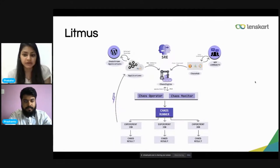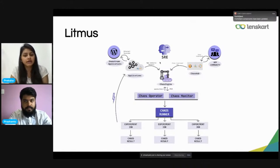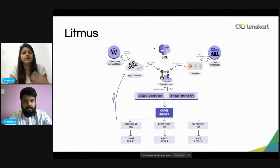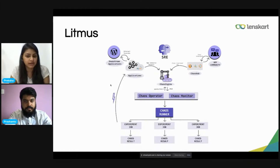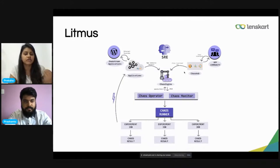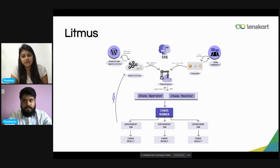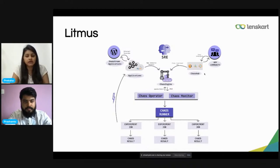So this is the architecture of Litmus. The SRE on the left side is the person who wants to execute the chaos experiment. We have downstream applications and the application itself, which is the infrastructure or service on which we want to execute the chaos experiment. On the right side we have App Community and Chaos Hub — this is basically where we get our chaos experiments from. Chaos Hub is where all the chaos experiments are placed, and the App Community is where members come and place their experiments and consume those experiments.